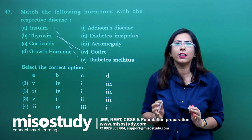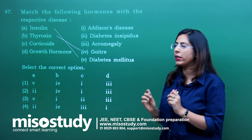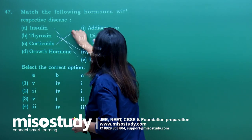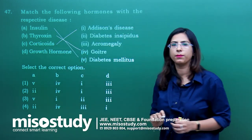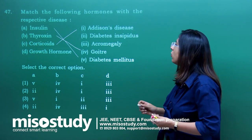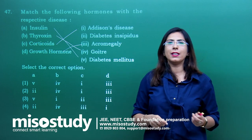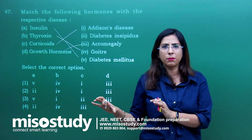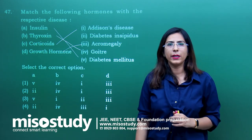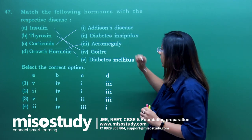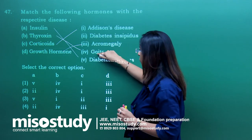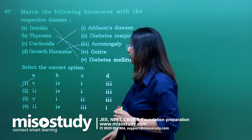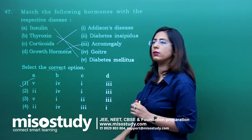The corticoids are related to the adrenal cortex, and the disease associated with corticoids is Addison's disease. Next is growth hormone, produced by the hypothalamus and stored in the posterior pituitary. Excess production during childhood leads to acromegaly. So the matches are: A — fifth (diabetes mellitus), B — goiter, C — Addison's disease, D — acromegaly. The correct option overall is option A.